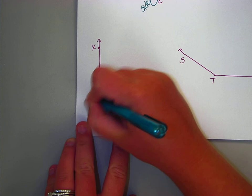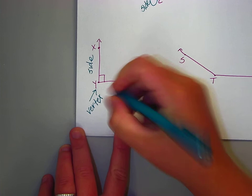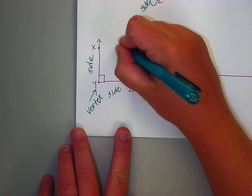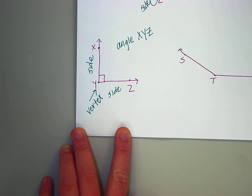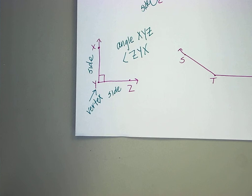All right, what about this example? Our vertex is Y. So that means this is a side and this is a side. So if we name this, we could say angle XYZ or angle ZYX.